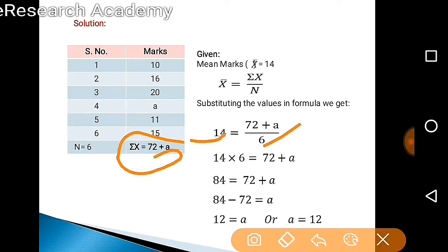We need to cross multiply this one, so 6 will go with 14 here. 14 times 6 equals 72 plus a. This gives us 84 equals 72 plus a. Then if we carry 72 to the left side, this will become minus. So 84 minus 72 equals a, or 12 equals a.